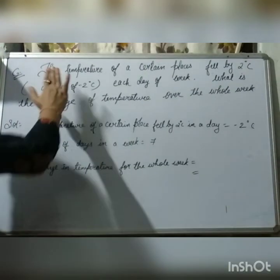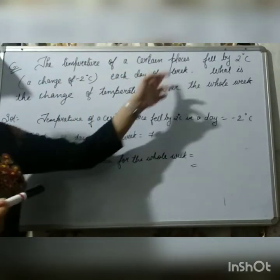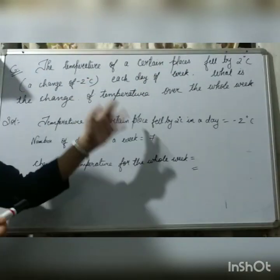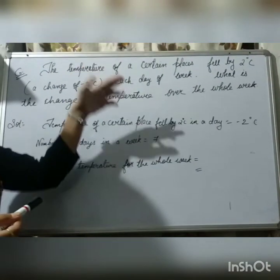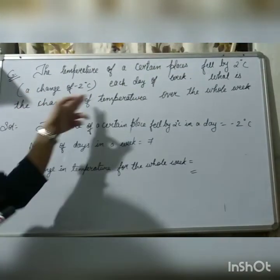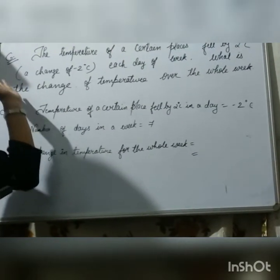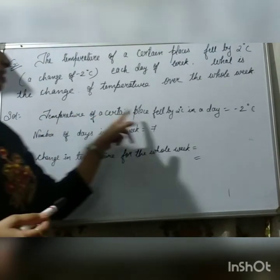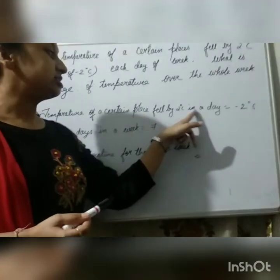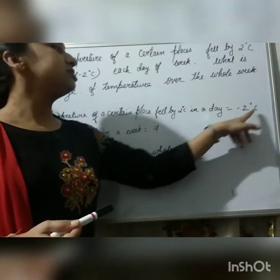Number 6 question. The temperature of a certain place is 12 by 2 degrees Celsius. A change of minus 2 degrees Celsius. That means each day of the week, in each day, the temperature is getting decreased by 2 degrees Celsius. That means minus 2 degrees. What is the change of temperature over the whole week? Whole week means 7 days total. So, temperature of a certain place fell by 2 degrees Celsius in a day. That means you have to write an integer as minus 2.